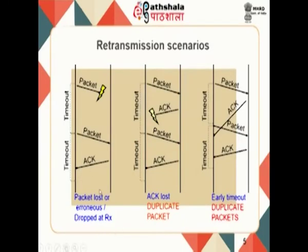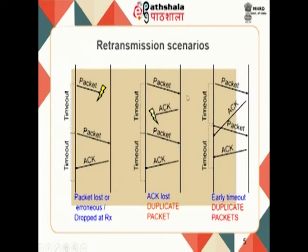The first scenario is the typical case of a lost or erroneous packet. The packet is sent, it is lost, no acknowledgement comes back, you time out, retransmit the packet, get an acknowledgement, and continue. A second scenario is that the packet reaches the other side correctly but the acknowledgement is lost. You again time out and retransmit, resulting in two copies of the same packet at the receiver — a duplicate packet scenario that must be handled.